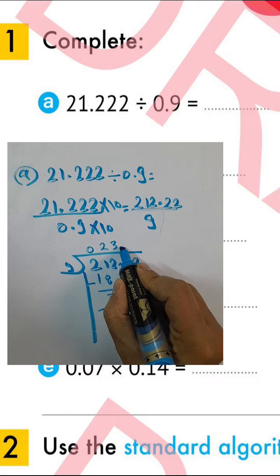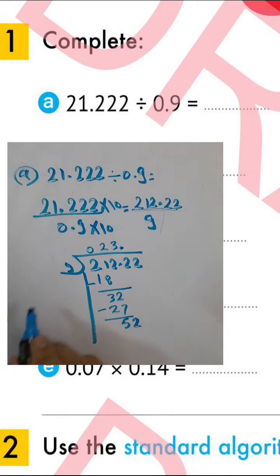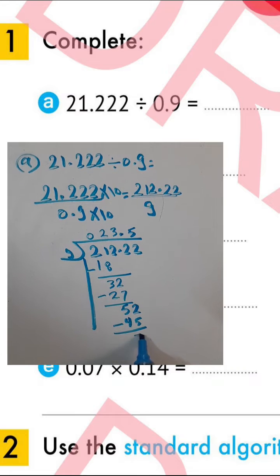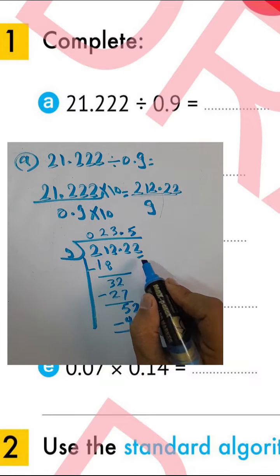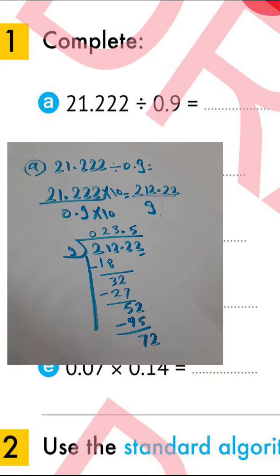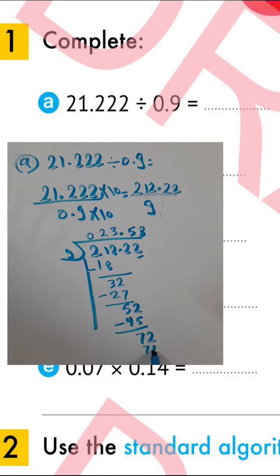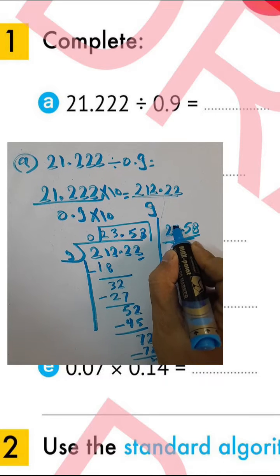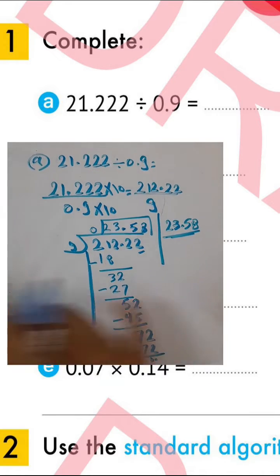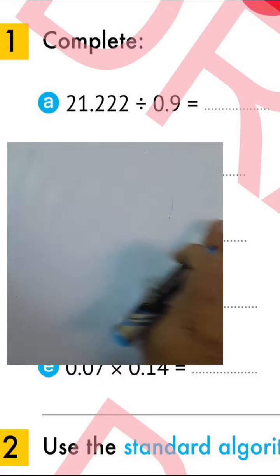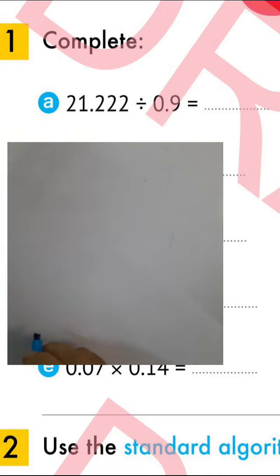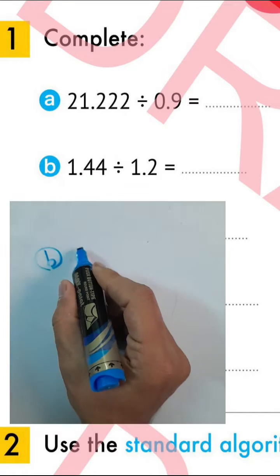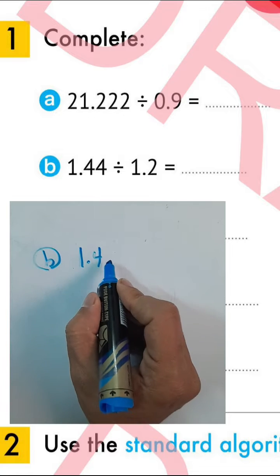We must put the point out here in the quotient, then drop 2. 52 divided by 9 equals 5. Five times 9 equals 45; the difference between them is 7. Then drop the next number 2. 72 divided by 9 equals 8. Eight times 9 equals 72. The result will be 23.58 repeating, written as 23 and 58 hundredths.